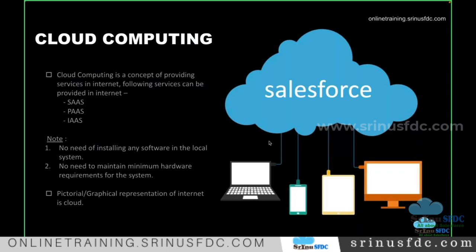Company to company, the services provided will be different. At a high level, there are three famous types of services offered using the cloud: Software as a Service, Platform as a Service, and Infrastructure as a Service. All these services are offered through the internet, meaning no need to install anything — all you need is internet and a basic computer.